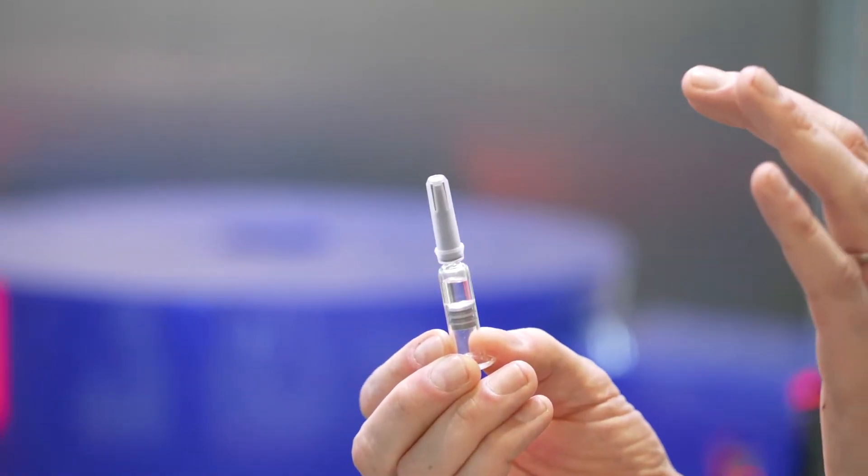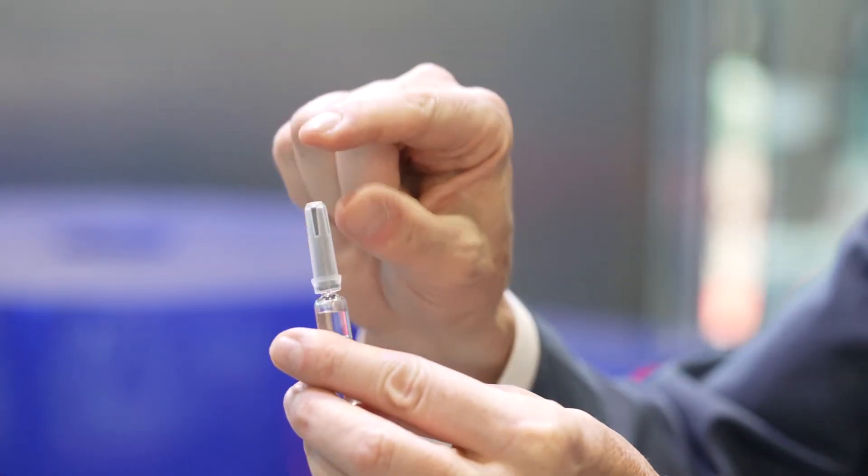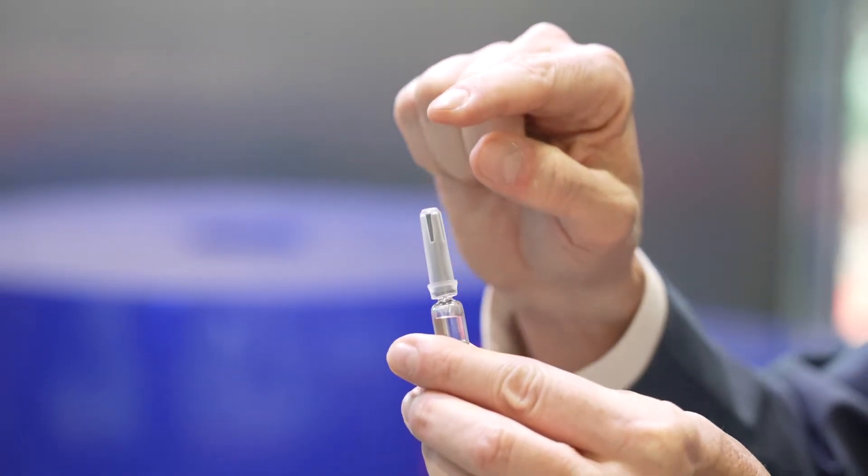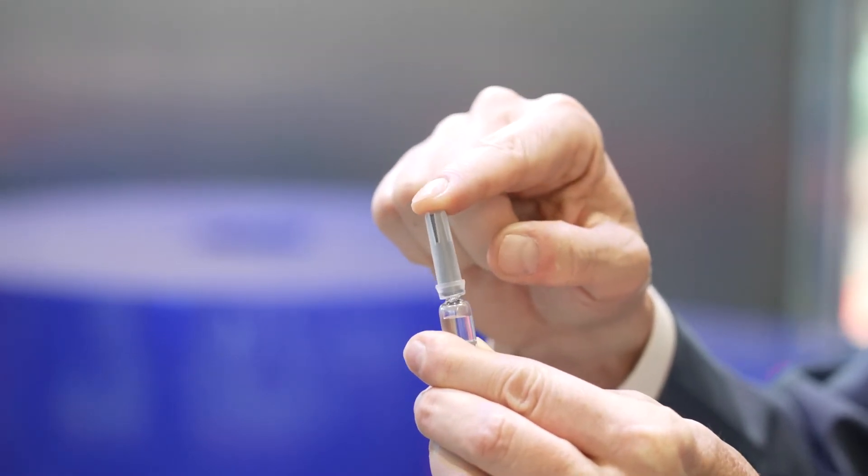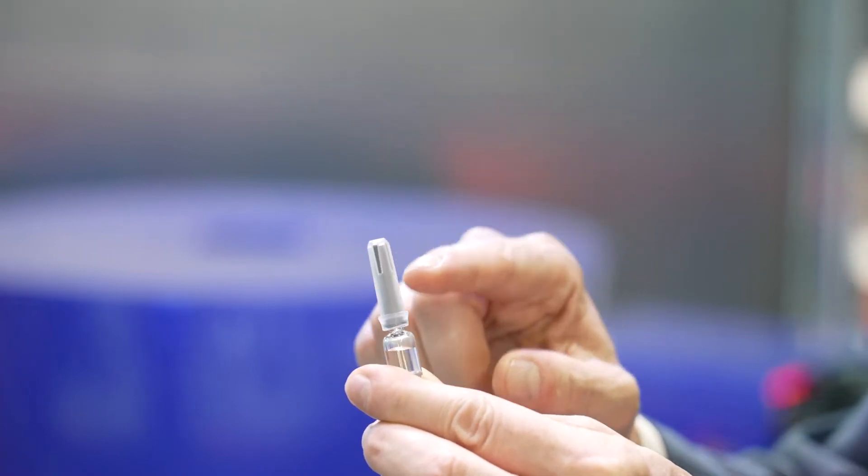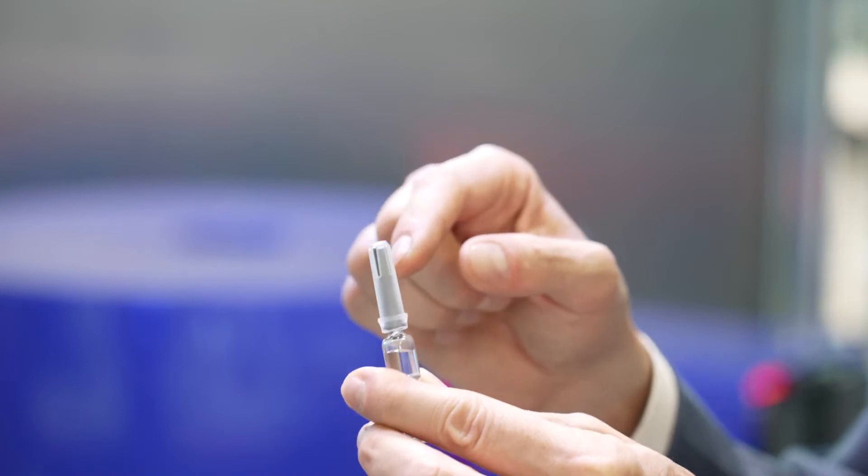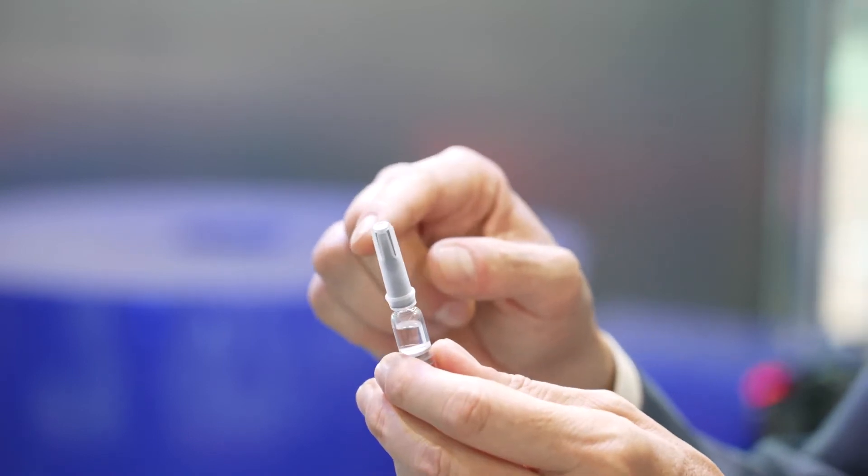Then we have the needle shield inspection. We check the needle shield needs to be present, not bent, not broken, not too high or too low. And of course, we don't want to have the needle sticking out. This can also be dangerous for the final recipient.